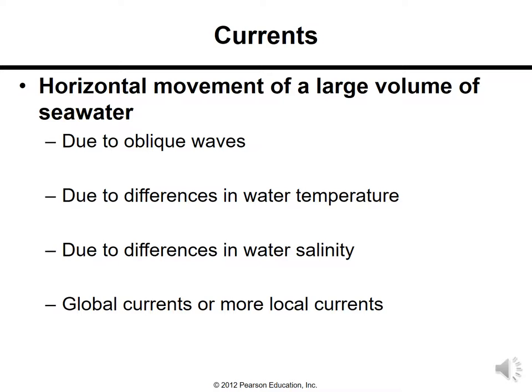The horizontal movement of a large volume of seawater is known as currents. Currents occur due to oblique waves, differences in water temperature, and differences in water salinity — when waters of different salinity mix, they form currents. On a global scale, thermohaline circulation refers to temperature- and salinity-driven currents, like the global great conveyor belt. There are also more local currents in smaller areas like lakes.